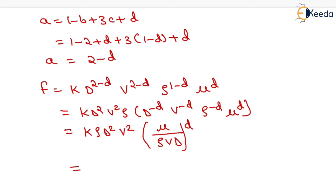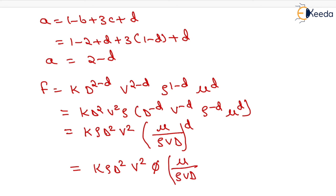We can write this as K, rho, D squared, V squared, and phi as a function of mu upon rho V D — that is the drag force and the complete solution of this problem. Thank you very much, students.